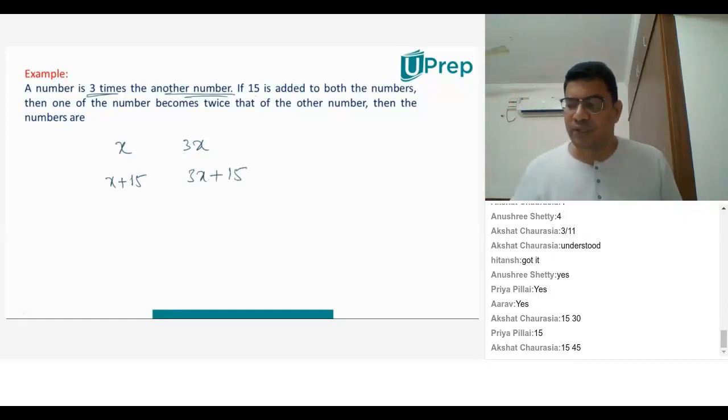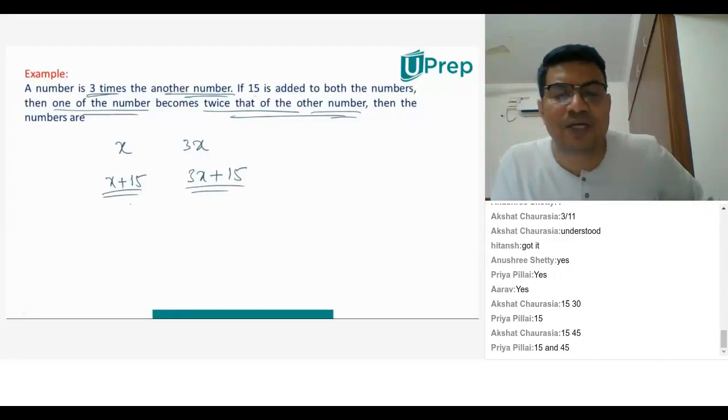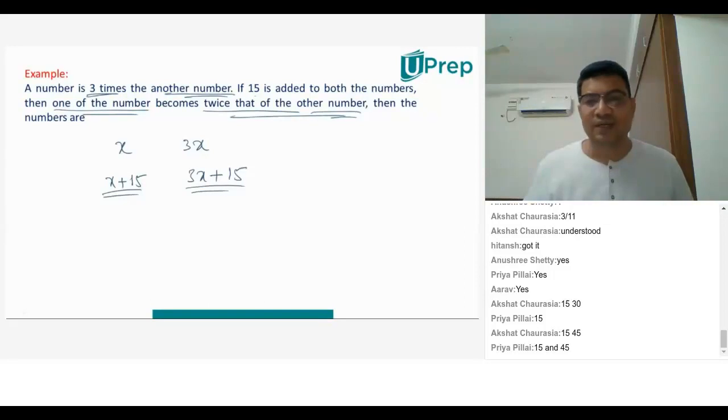So what is he telling you? If 15 is added to both numbers, then one of the numbers becomes twice that of the other number. Which one will be greater? Of course, 3X plus 15 will be greater because you have multiplied with 3 and added 15 on both sides. So he's saying one of the numbers becomes twice the other.